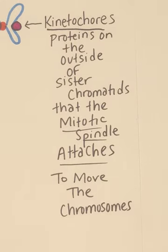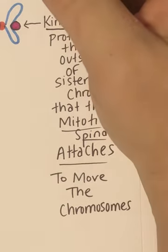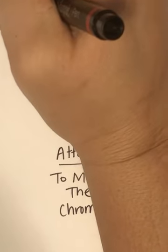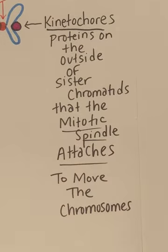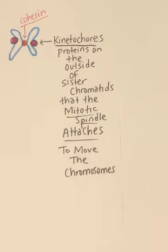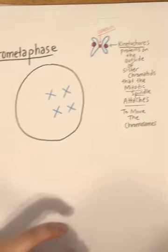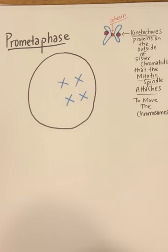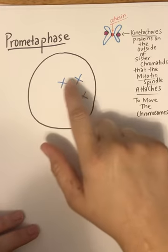The way that chromosomes are held together is by another protein called cohesin. Cohesin is going to hold the sister chromatids together. Kinetochores are proteins on the outside, so during prometaphase the job is that the mitotic spindles have to attach — they literally have to attach to the chromosomes.